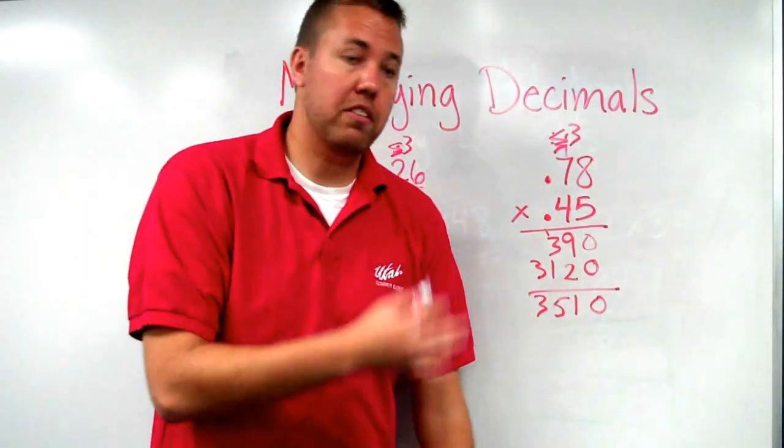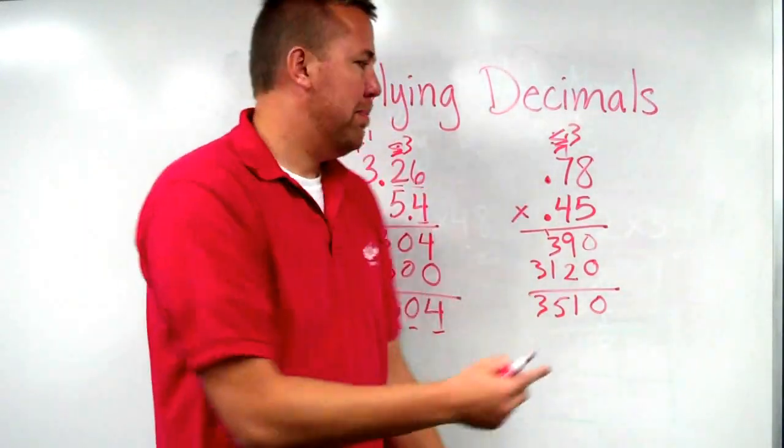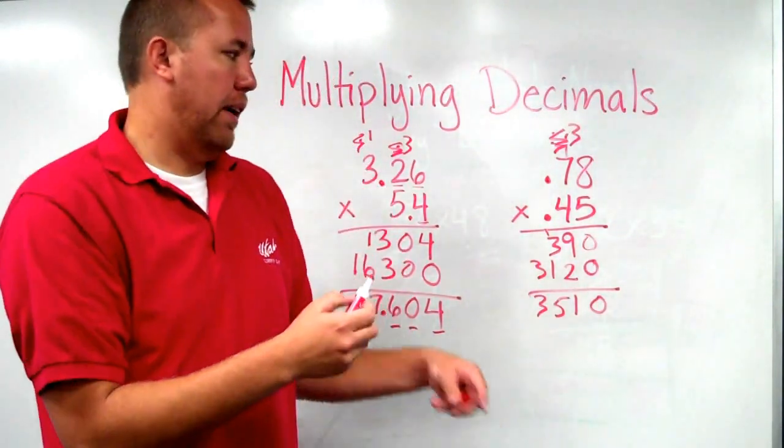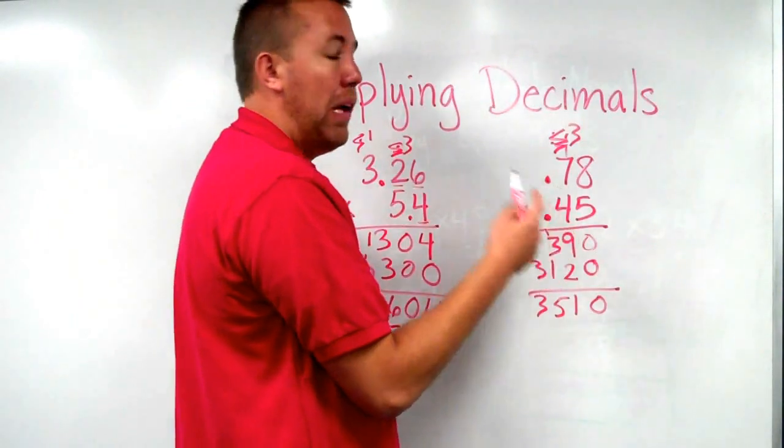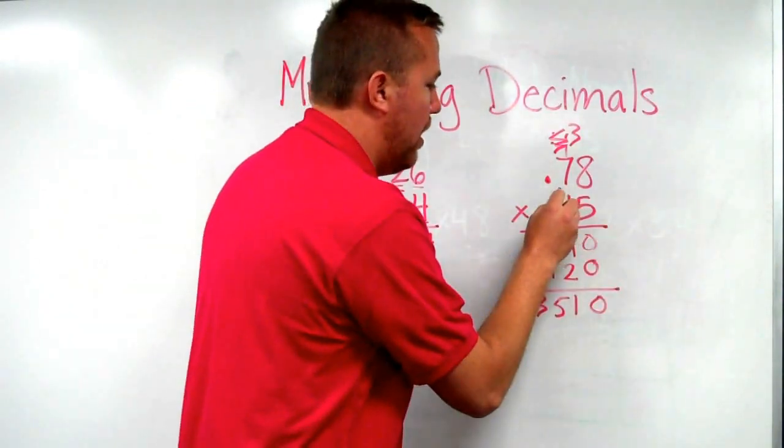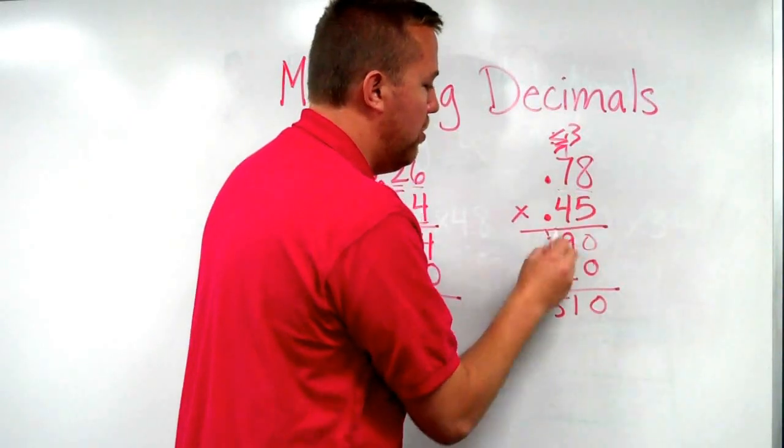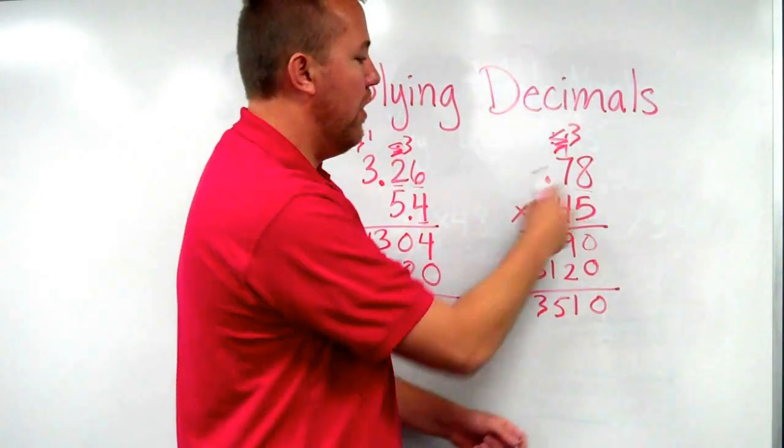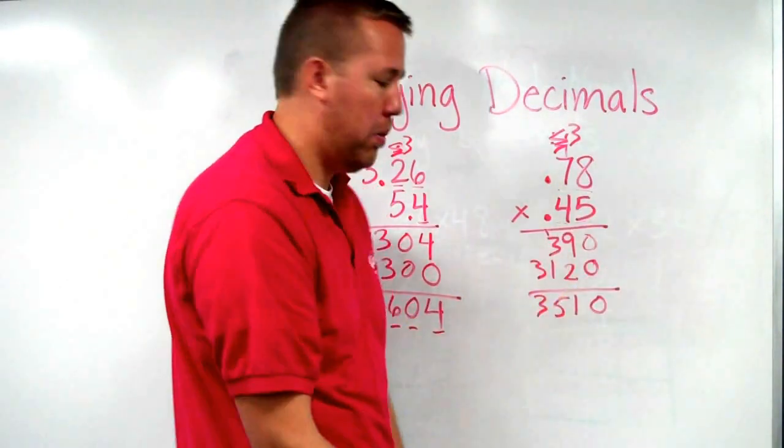We get 3510. Seventy-eight times forty-five is 3510. But, yeah, we have to deal with those decimal points. Okay, so we count the digits after the decimal in the problem. There is one, two, three, four. We count them in the entire problem. There are four digits after the decimal in the problem.